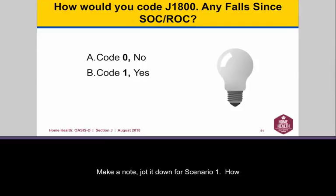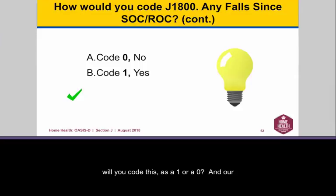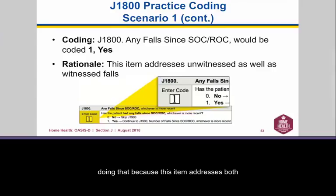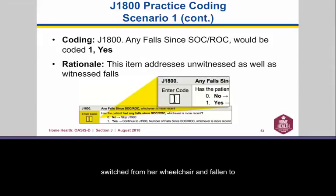The correct answer is to code this as number 1, yes. You would do that because this item addresses both unwitnessed and witnessed falls, and we know that the patient's daughter told us in a previous nursing visit that the patient had slipped from her wheelchair and fallen to the floor. So you would enter the number 1 in the code box, indicating that yes, one fall occurred.